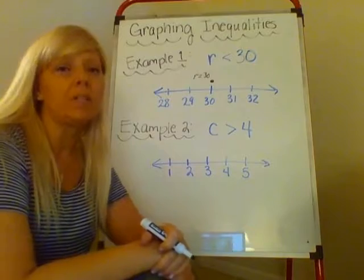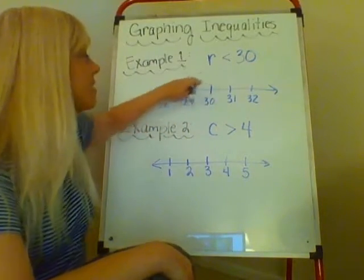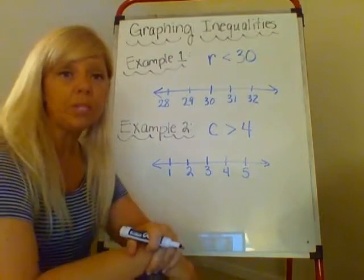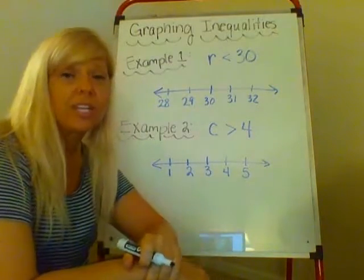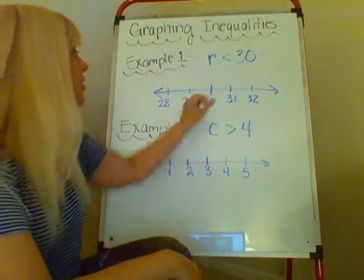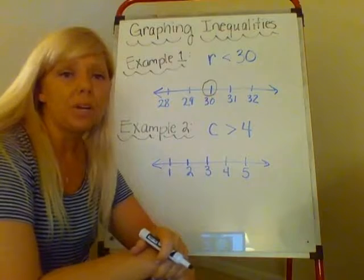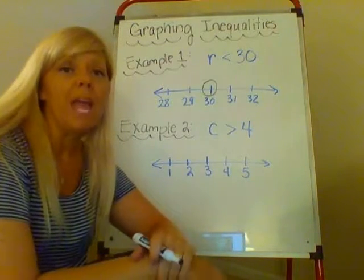But r is any number less than 30. So what I'm going to do is, since r could be really, really, really, really close to 30, it just can't be 30, I'm going to put an open circle on 30. This just means that my number, my integer, my rational number can be any number as close to humanly possible as 30, it just can't be exactly 30.